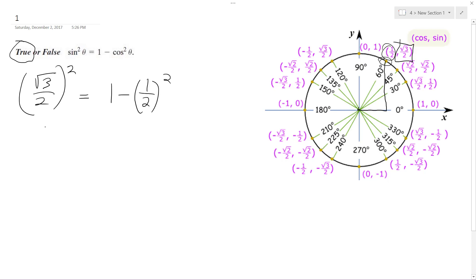So this becomes the same thing as square root three squared, and then two squared on the bottom. So it becomes three over four.